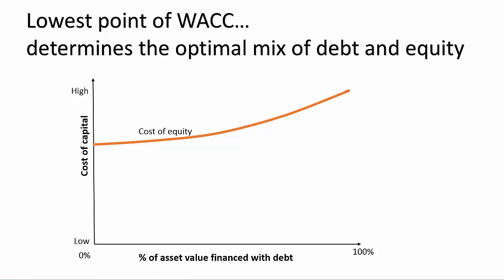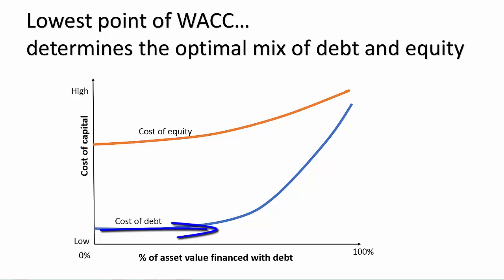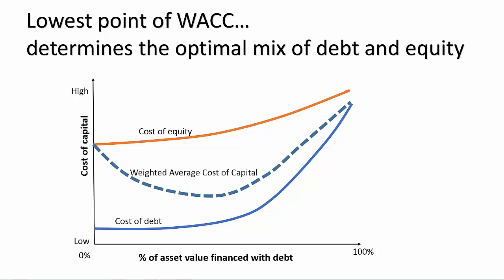Now let's look at the cost of debt curve. Debt is generally a cheaper source of financing when the company has strong security to offer. So as we add debt incrementally into our capital structure, the cost of debt stays constant until the company runs out of good assets to provide as collateral. Then debt starts getting expensive quickly because it's largely unsecured at that point. When we plot a composite of these two curves, we create a curve that calculates the Weighted Average Cost of Capital, or WACC.